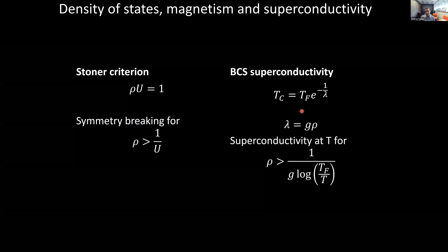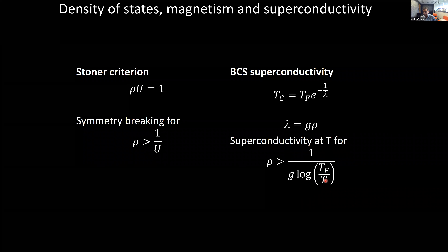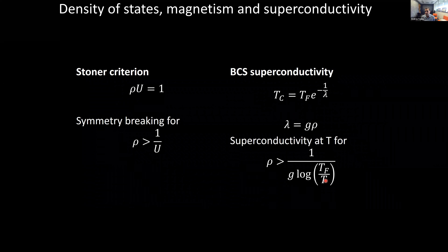The weak coupling BCS formula applicable for systems in the anti-adiabatic limit has a dimensionless coupling which depends on density of states. For a given temperature, you will see superconductivity in a metal, assuming there's not something else going on, if your density of states is high enough. It has to be higher than some function of the electron-phonon coupling or whatever the coupling is to your glue, your Fermi temperature, and your actual measurement temperature. The basic point is that everything interesting — correlated physics, whether it's all-electronic correlations or related to phonons — happens at high density of states.